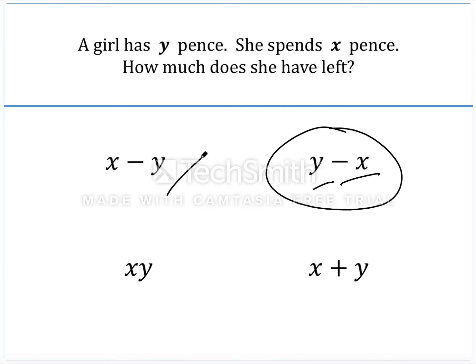If you've got this answer, x minus y, that is incorrect, because this is taking the amount that she has originally away from the amount that she spends.